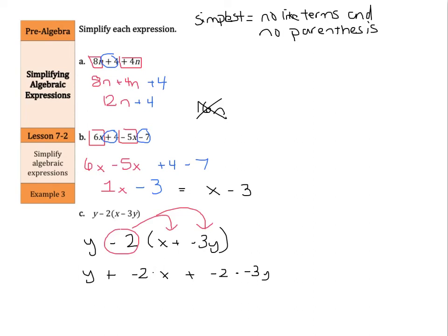Now I can combine my negative 2 times x to be negative 2x so y minus 2x and then negative 2 times negative 3 is a positive 6 so plus 6y. Now notice up here I was not allowed to add a 12n plus 4 because they're unlike but I can multiply terms that are unlike. I can take my coefficients here the negative 2 which is the constant times the negative 3 the coefficient to get a positive 6y.